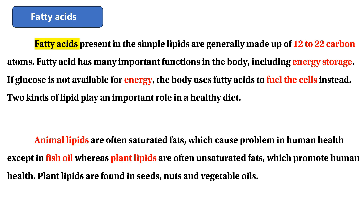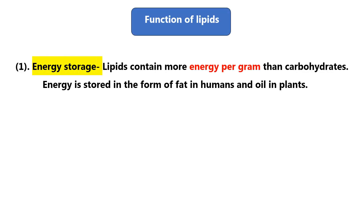Unsaturated lipids are found in seeds, nuts, and vegetables. These can be referred to as polyunsaturated if the lipid contains multiple double bonds.